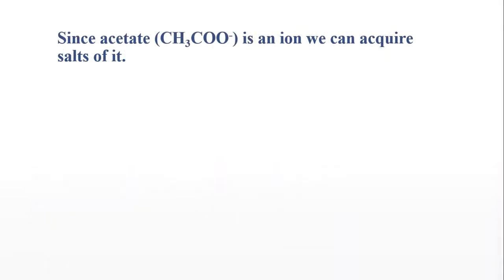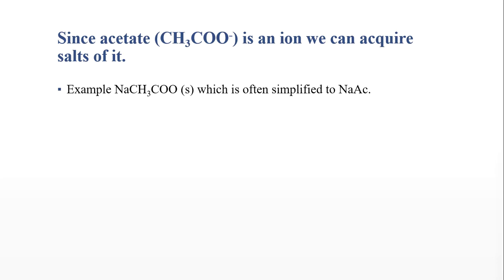Acetic acid formed the acetate ion, and a negative ion like this means we can probably combine it with a positive type of ion and acquire salts of it. For example, sodium acetate — which is easily formed if you let sodium metal react with acetic acid to form sodium acetate. This is often simplified just to NaAc, which stands for the acetate ion instead of CH3COO.